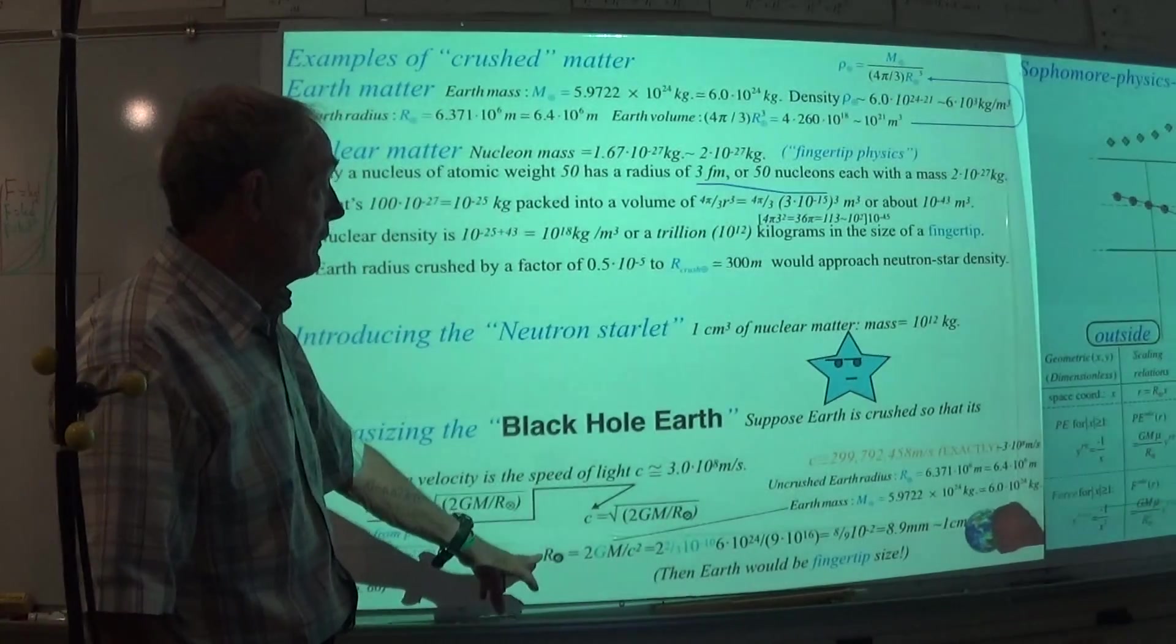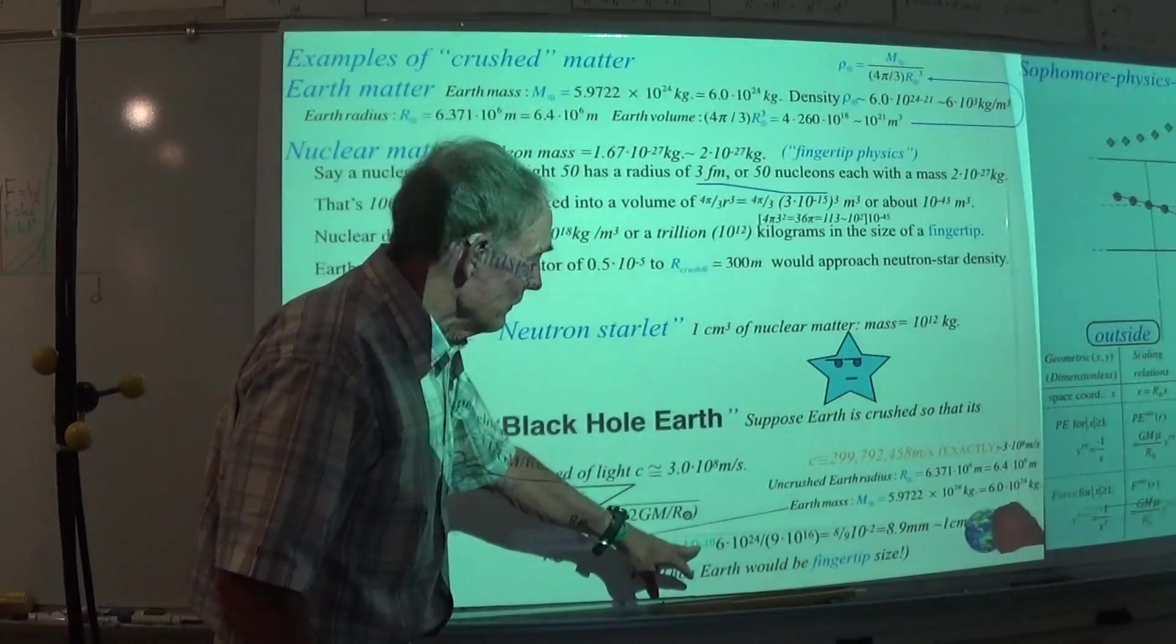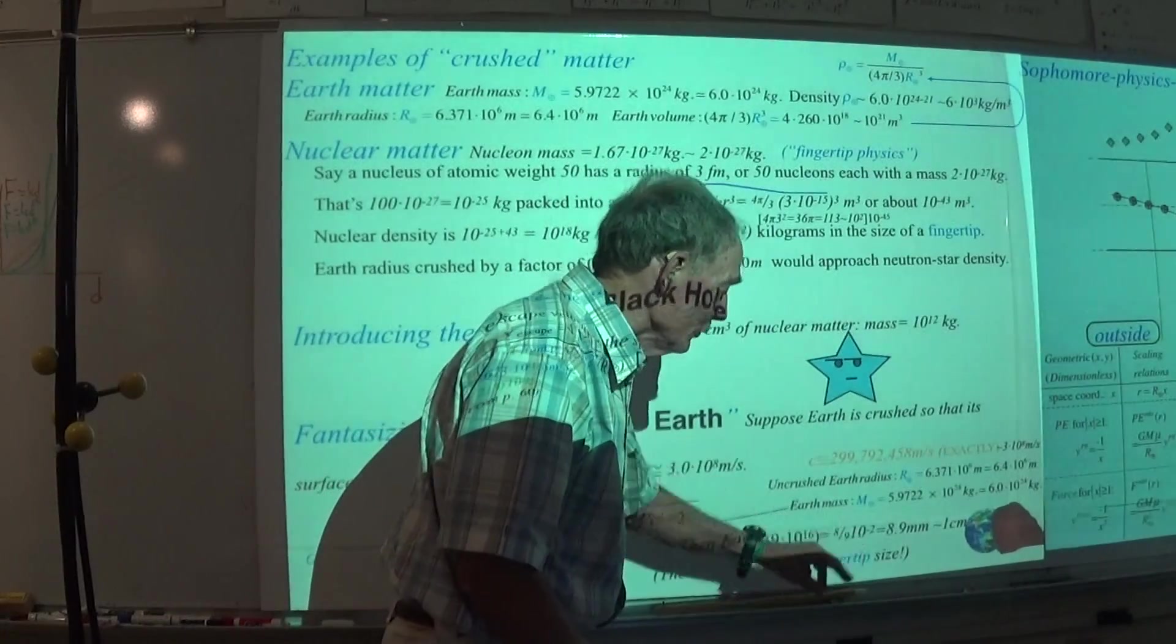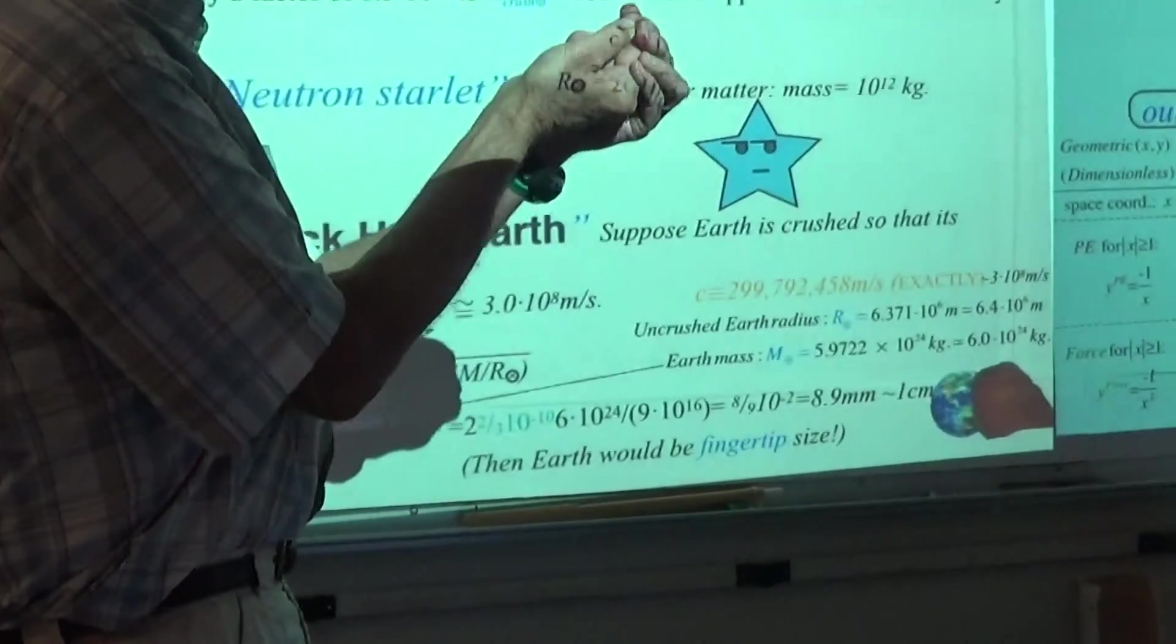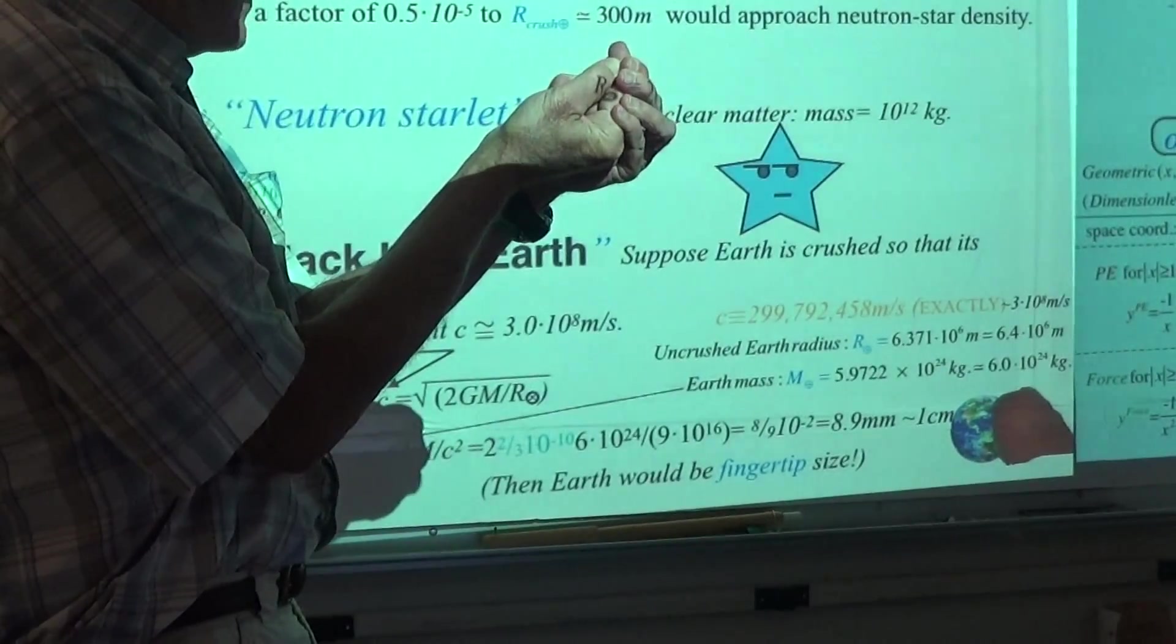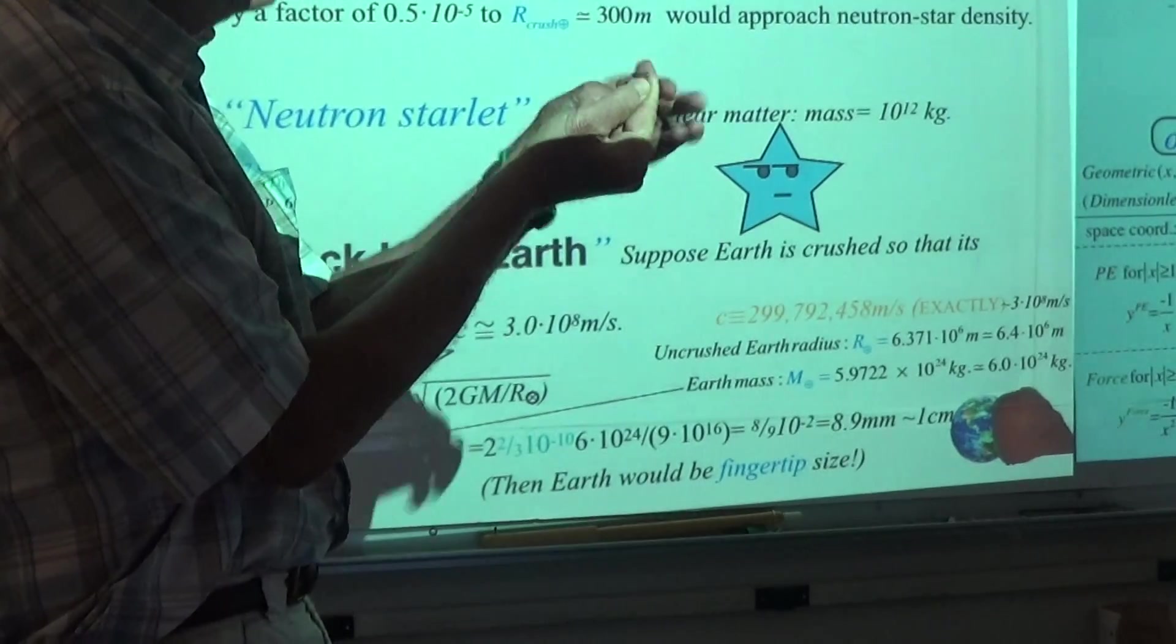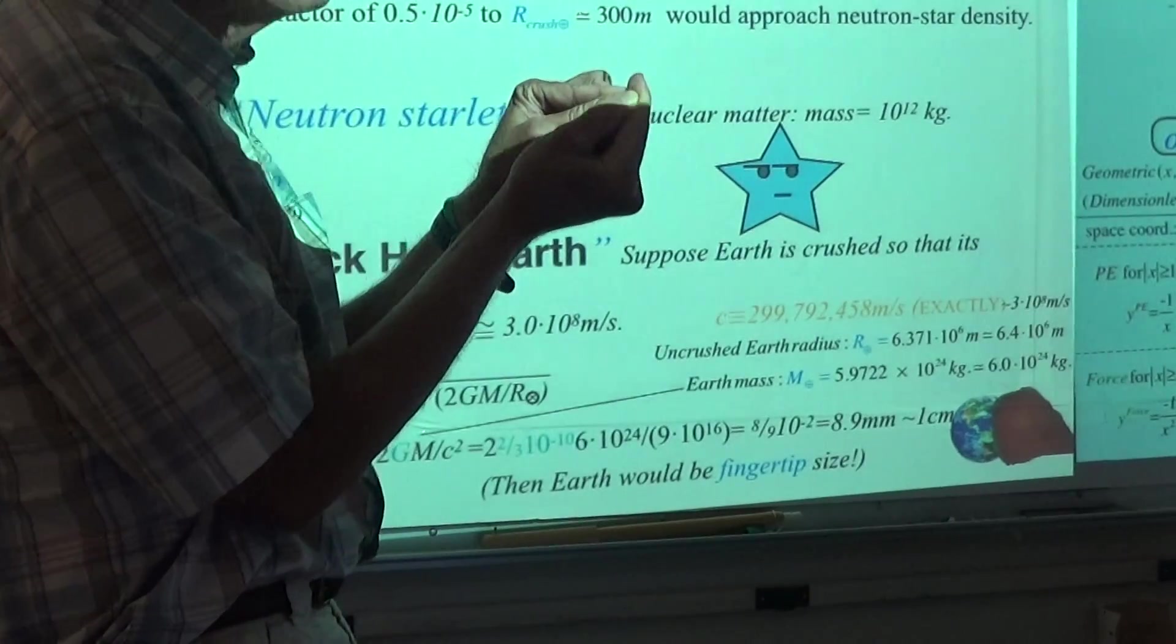That is demanding that I get c by solving this equation here for the radius that would be, and you can see that when I do that, first of all I get a bunch of numbers here, but basically I get eight ninths of ten to the minus two, ten to the minus two, I get a fingertip. So this is the world at your fingertips, inside one fingertip. That's the density. Earth as big as, well that's a big finger because I blew it up there.